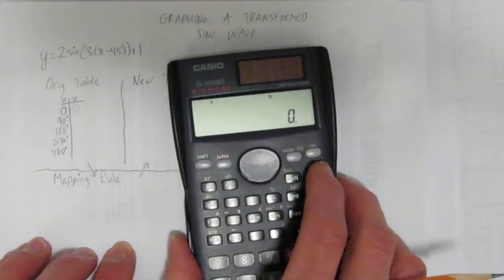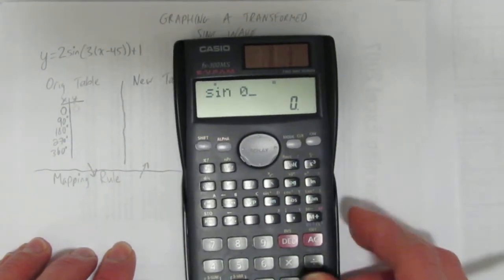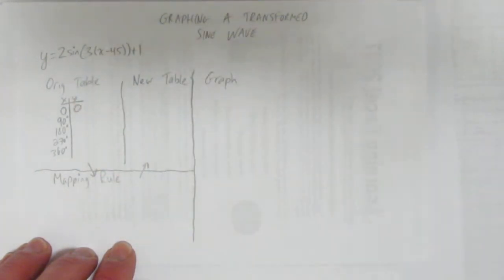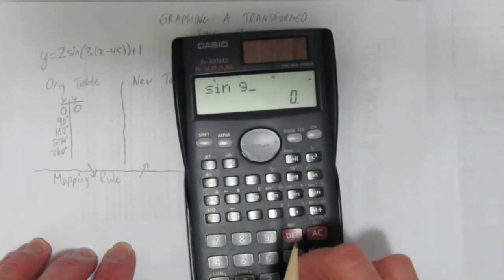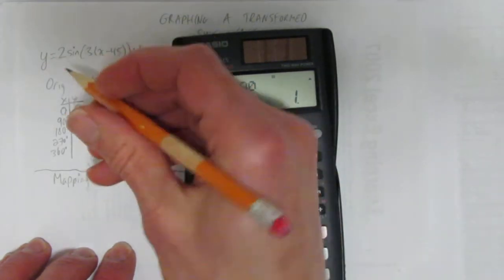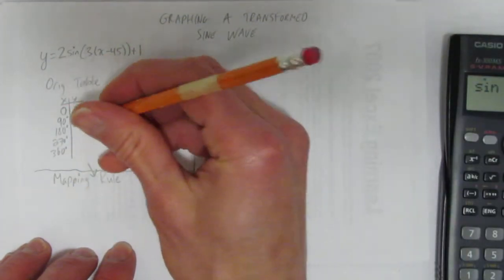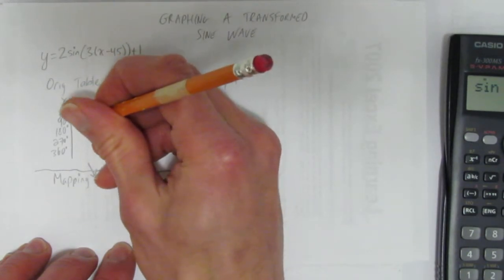You can ask your calculator if you don't know. What's the sine of 0? You get 0. Sine starts at 0. What's the sine of 90? It's 1. And you might know it off by heart. It's good if you do. It just saves a bit of time.